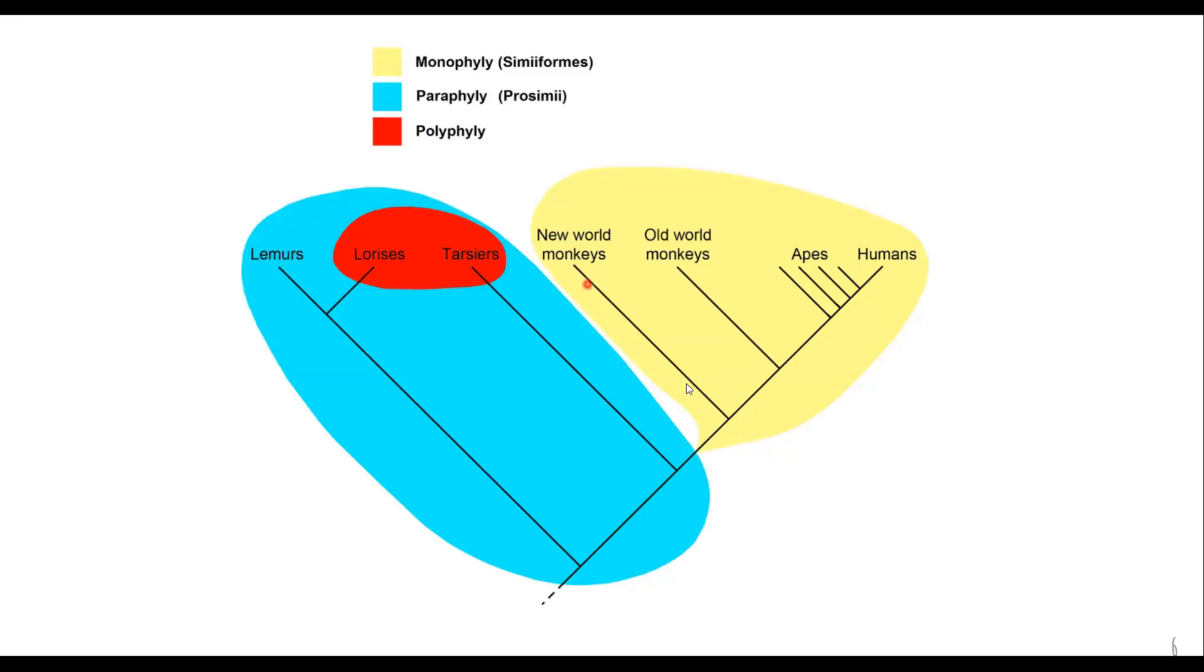So first let us look at the yellow. It is example of a monophyletic clade. Why? Because these are all descendants of this common ancestor right here. So new world monkeys, old world monkeys, apes, humans. They have come from all one ancestor and we have grouped it all together. So this is a monophyletic tree.